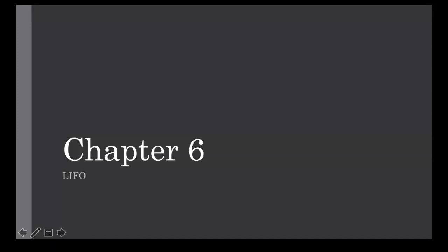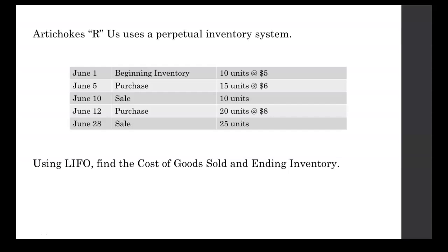Let's work through a perpetual inventory problem, but this time using LIFO. Artichokes R Us uses a perpetual inventory system. On June 1st, the beginning inventory is 10 units at $5 apiece. On June 5th, we make a purchase of 15 units at $6 apiece. We sold 10 units on June 10th. On June 12th, we make another purchase — 20 units at $8 apiece. And then on the final day, we make a sale of 25 units. Using LIFO, last in first out, we need to find the cost of goods sold and ending inventory.